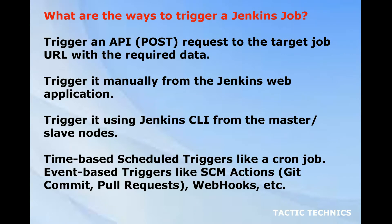What are the ways to trigger a Jenkins job? Trigger an API POST request to the target job URL with the required data. Trigger it manually from the Jenkins web application. Trigger it using Jenkins CLI from the master or slave nodes. Time-based schedule triggers like a cron job. Event-based triggers like SCM actions, Git commit, pull requests, webhooks, etc.